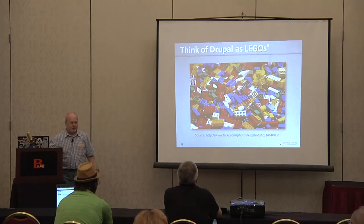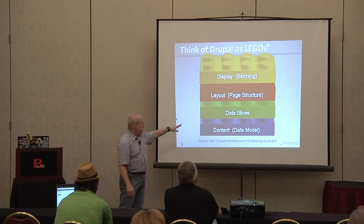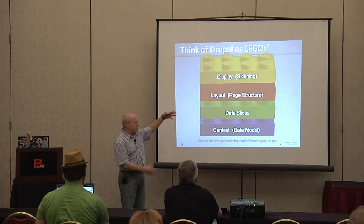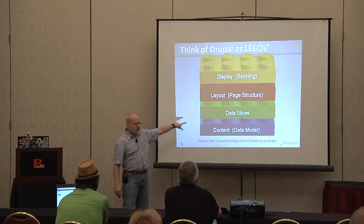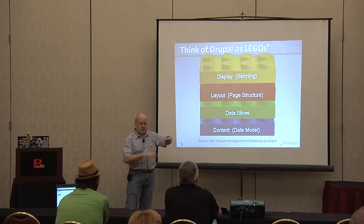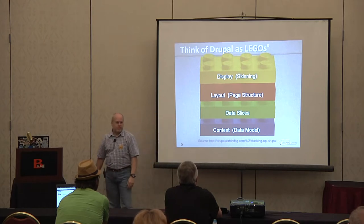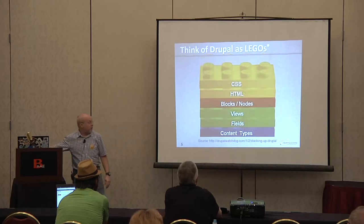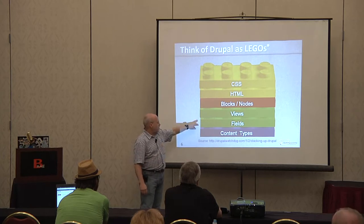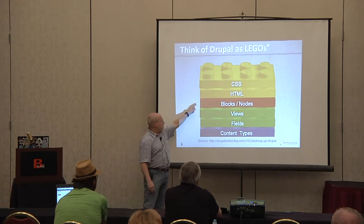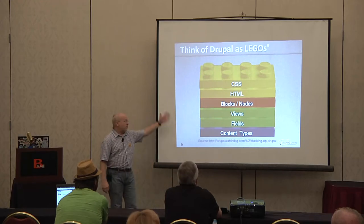If you break Drupal down into its different parts, it helps a lot. There is a data model — the content stored in the database — and pieces of that get pulled into nodes and views to create the actual content display, which is arranged by a layout. More specifically, Drupal uses content types to create nodes, then fields and views are combined together to display nodes and blocks. On top of that you need HTML and CSS to make it look like something on your site. That's the basic idea of every Drupal site.